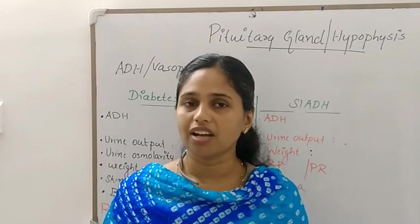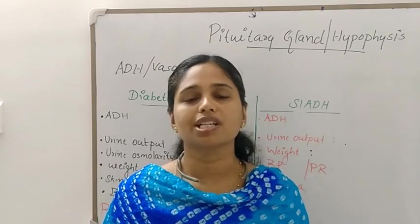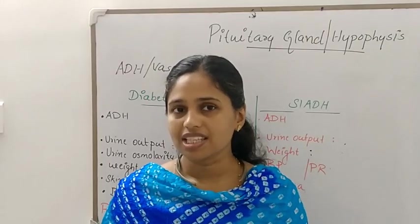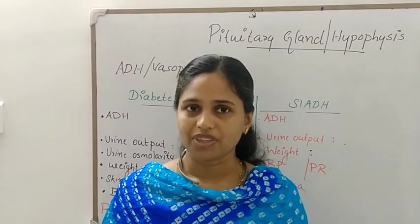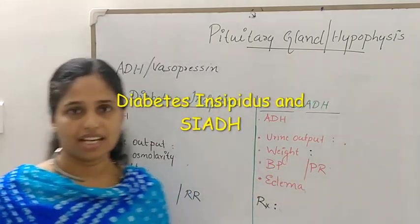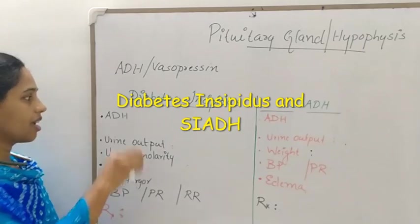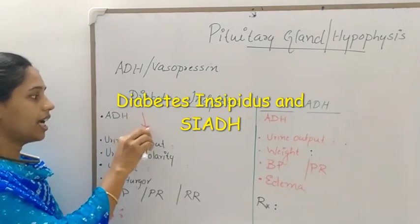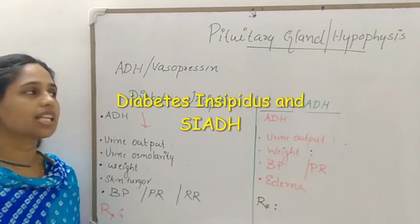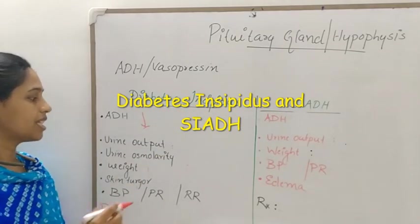When ADH is elevated, fluid retention occurs, resulting in fluid volume excess. These are two opposite situations. A deficit or hyposecretion of ADH leads to decreased ADH levels, and this condition is called diabetes insipidus.